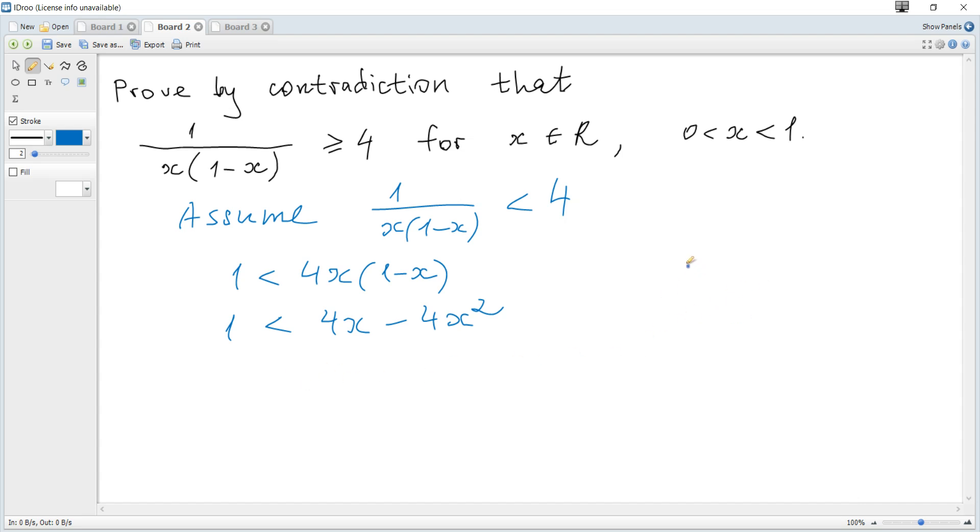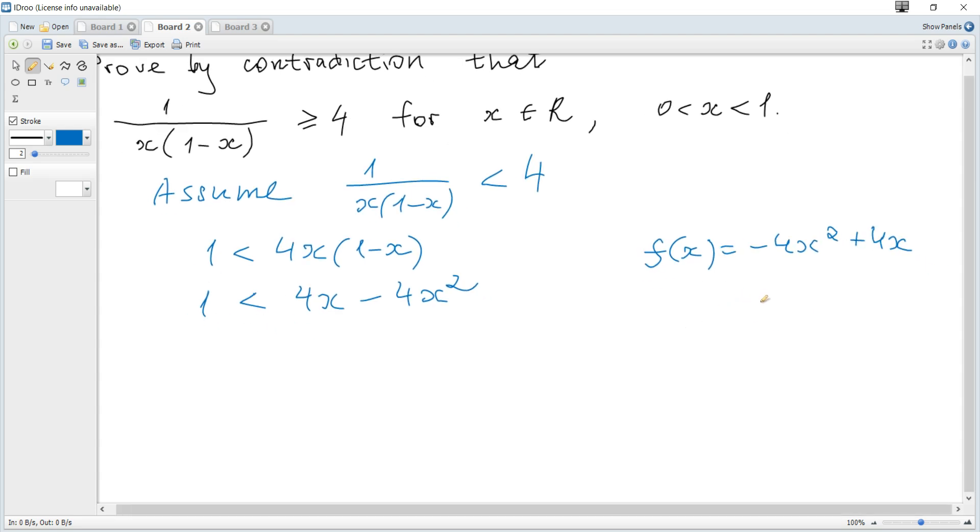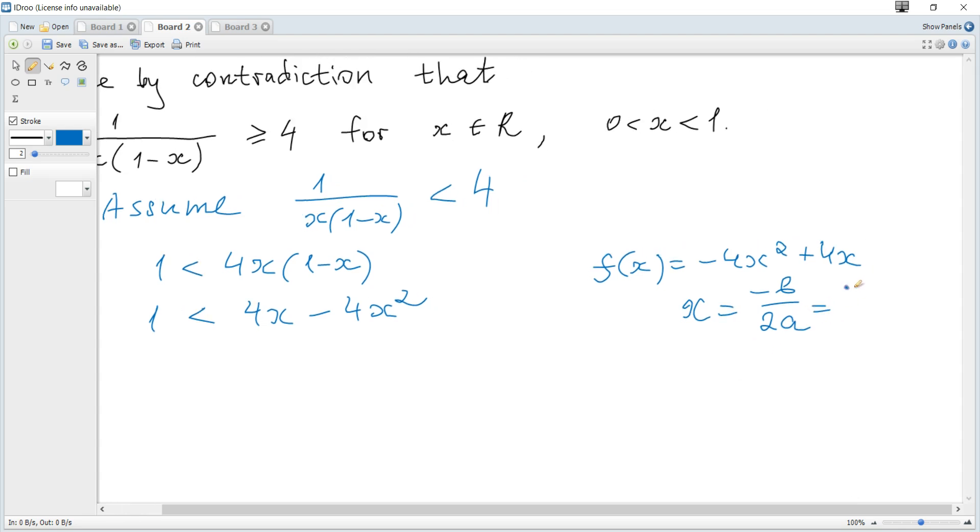Let's consider f(x) = -4x² + 4x. The vertex formula is x = -b/(2a), which is -4/(2×(-4)) = 1/2.